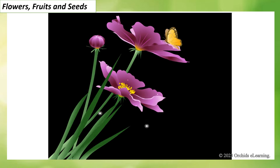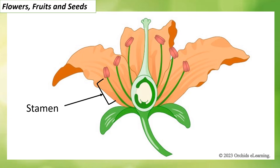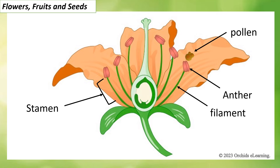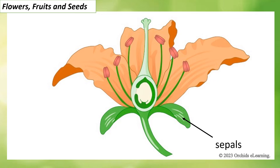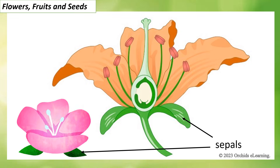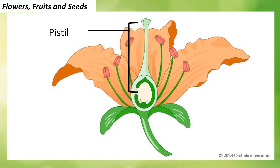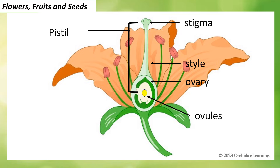A flower is the reproductive organ of a plant. Stamens are the male reproductive parts of a flower; each stamen has two parts — a thin stalk called the filament and a knob-like structure called the anther. The anther produces a powdery substance called pollen. Sepals are the green leaf-like structures at the base of the flower; they protect the flower during its development and support the petals when the flower blooms. The pistil is the female reproductive part, with three parts: a top portion called the stigma, an enlarged base called the ovary, and a tube-like structure called the style that connects the ovary and stigma. The ovary contains tiny ball-like structures called ovules, which later become seeds.